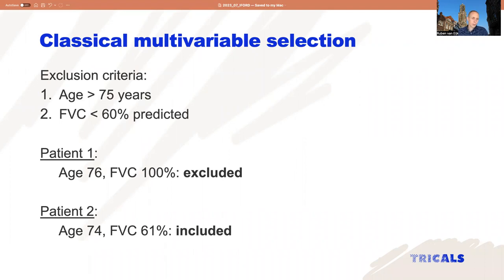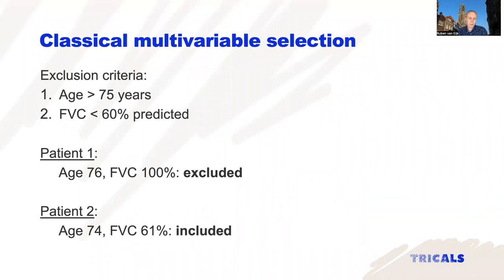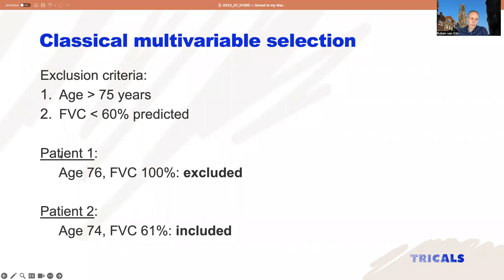Consider two example patients. Patient one is 76 years old and is excluded based on the age limitation, but their vital capacity — lung function — is actually quite good. Patient two is just two years younger and has a poorer lung function, but falls within the criteria. If you think about which patient is most likely to complete the study, it is probably patient one, not patient two. So by using group-wise or list-wise inclusion criteria, we are actually selecting the wrong patient in this case.